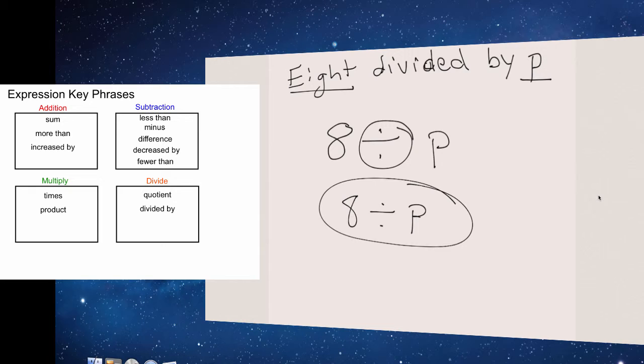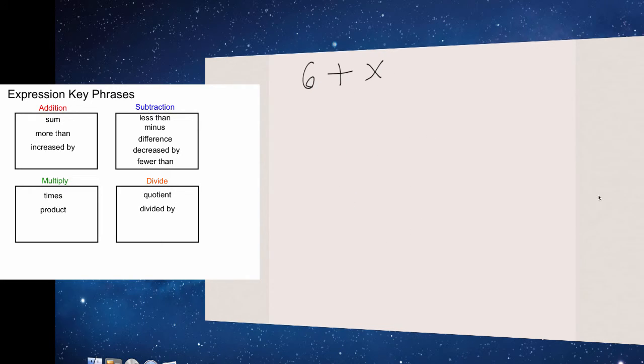Let's work the other way around. Let's write a phrase for this algebraic expression. I have 6 addition sign. That means I could write plus or I could say more than. I'm going to go with plus. That's the easiest. Plus X. And now I've just written a phrase for this algebraic expression.